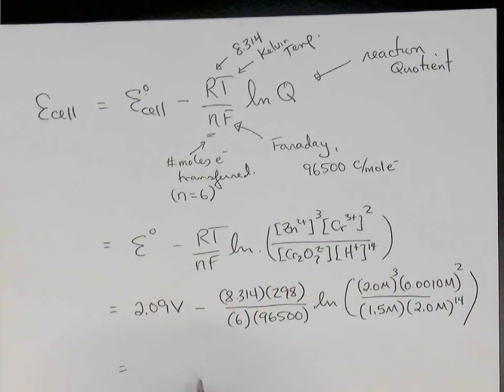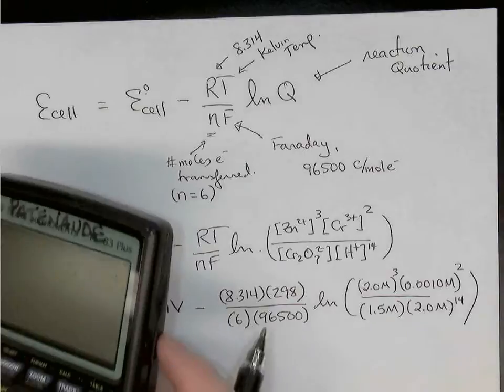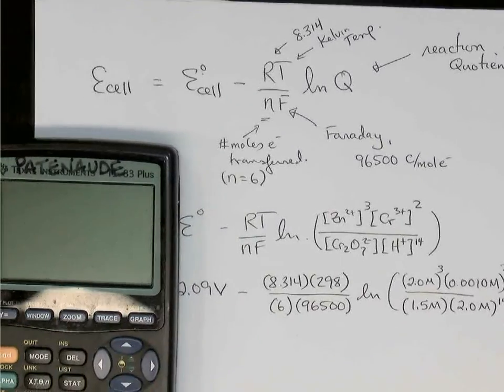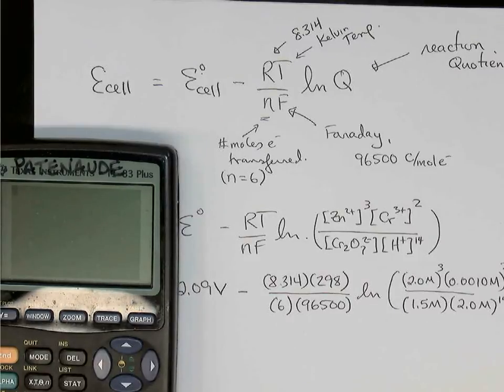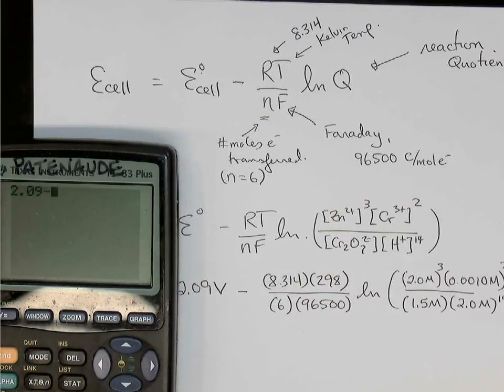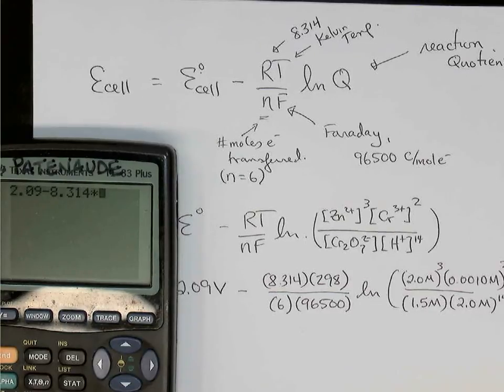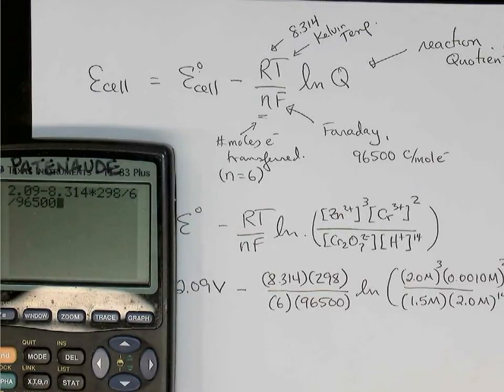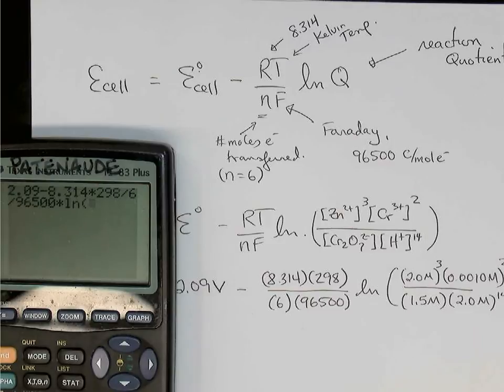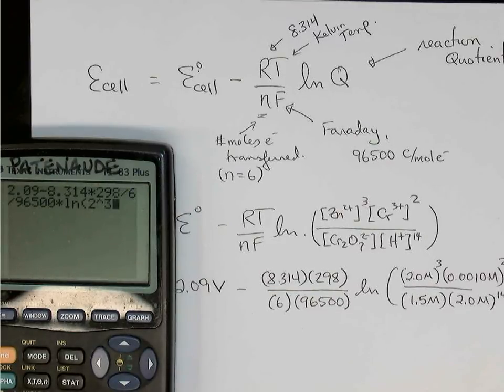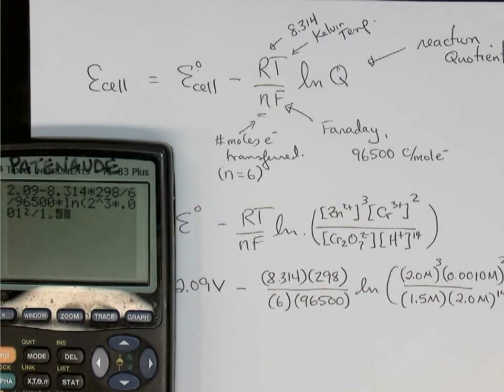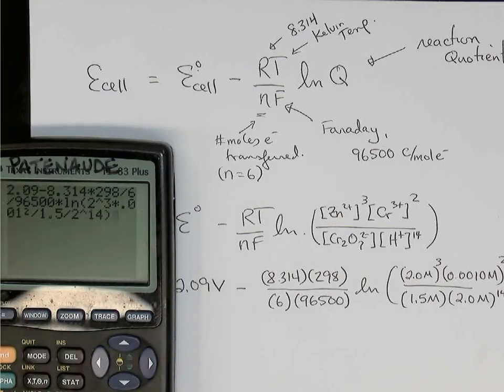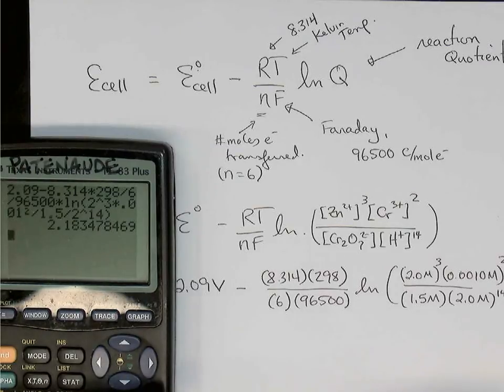So now we're going to grab a calculator and evaluate this. I'll just do it all in one step on a calculator. So 2.09 volts, take away 8.314 times 298, divide by 6, divide again by 96,500, and then multiply by that natural log. And in here we have 2 cubed times 0.001 squared, divide by 1.5, and then divide again by 2 to the 14th. Close that bracket. Equals 2.18 volts.